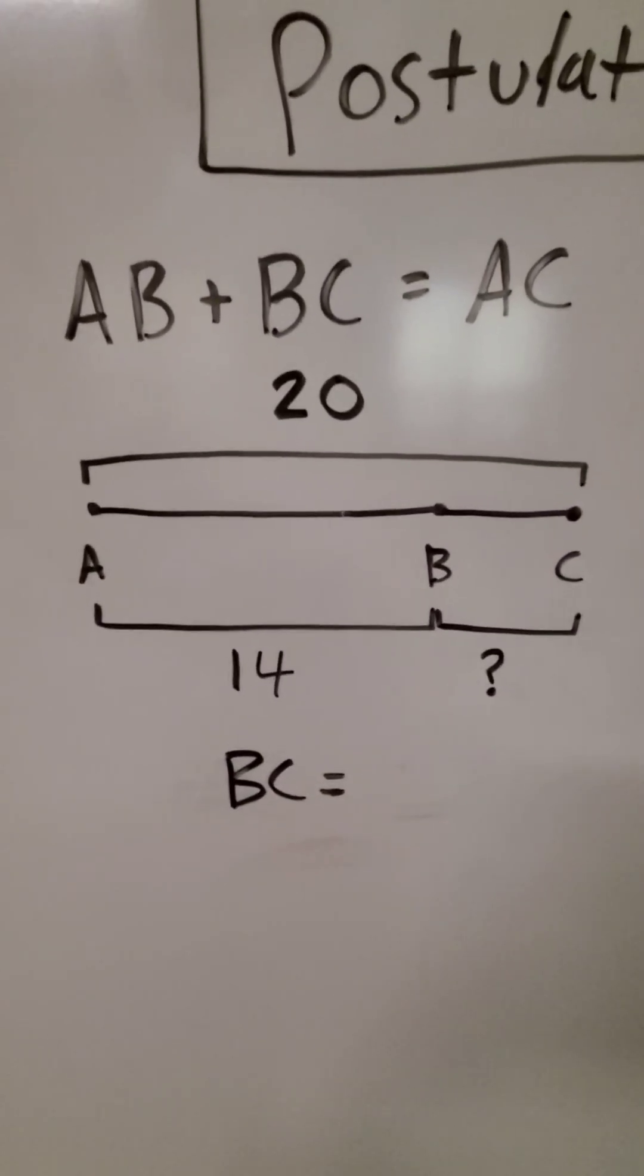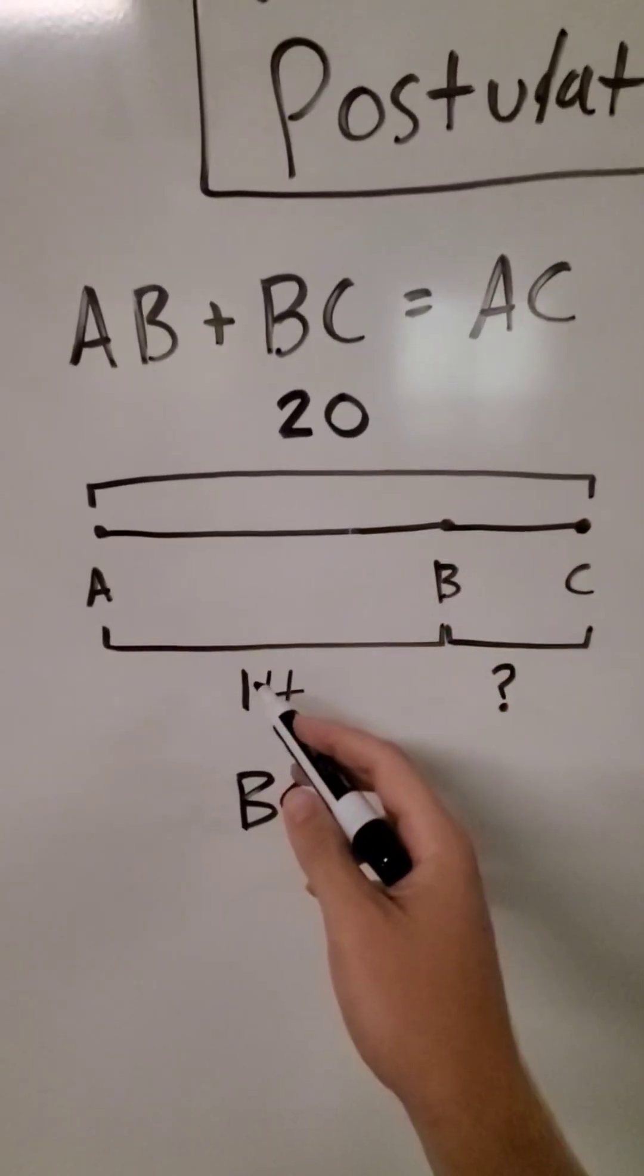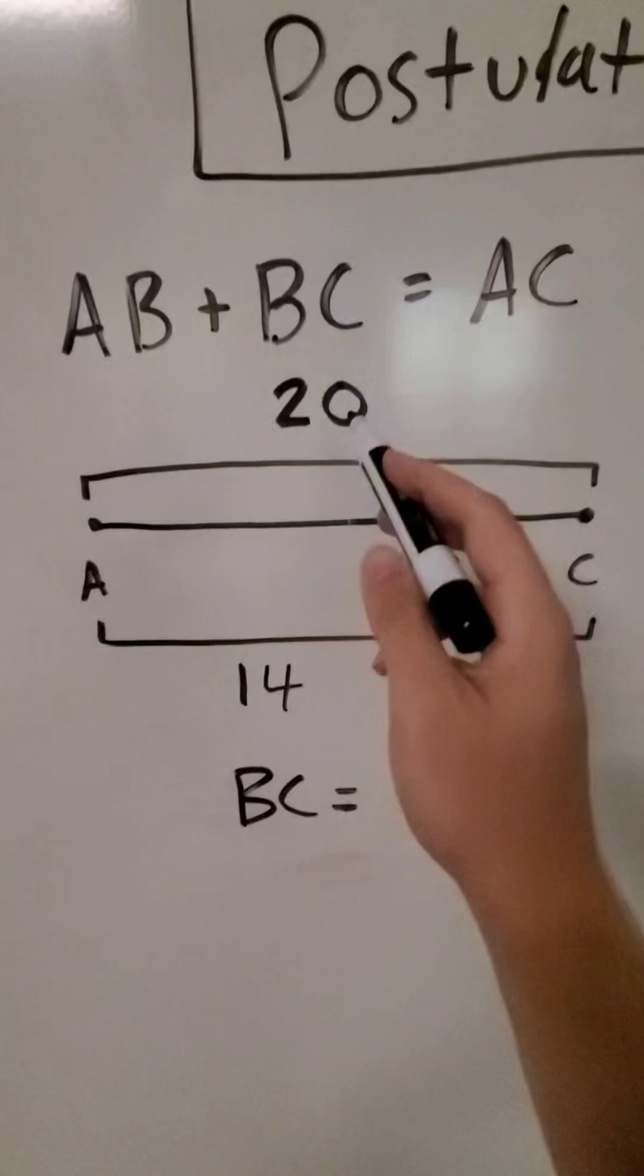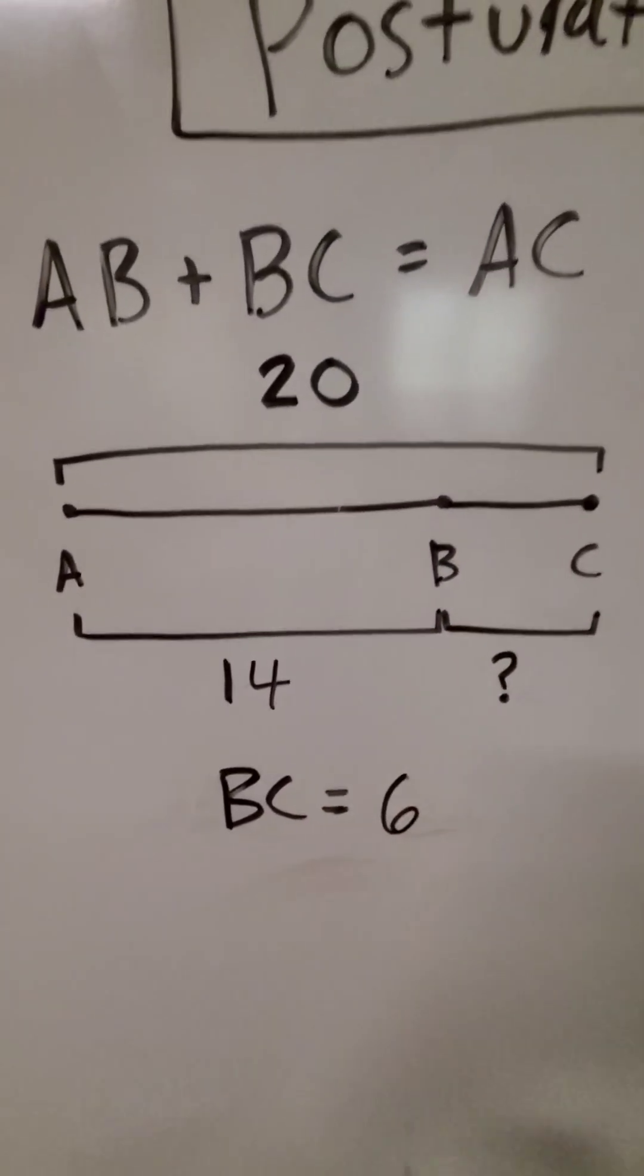We can also use the segment addition postulate to do subtraction. If we have the whole thing is 20 and one of the parts is 14, we can subtract the two from each other and get that the other part would be 6.